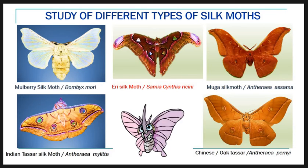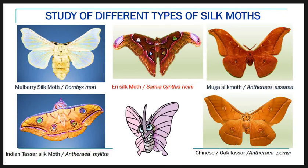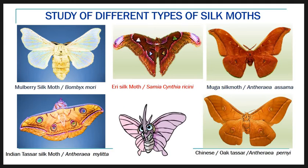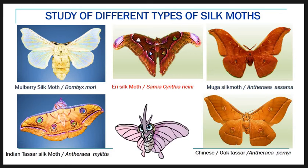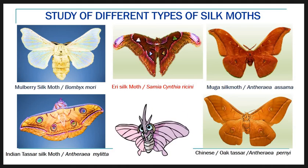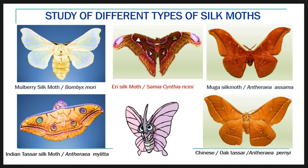Let's start with the mulberry silkworm. The biological name of the mulberry silkworm is Bombyx mori. It is indigenous to India and China, from where it has been introduced to many parts of the world for commercial purposes. The natural food in all cases is the leaf of the mulberry plant, hence they are commonly called mulberry silkworm. The silk produced by Bombyx mori is white or creamy white in color.